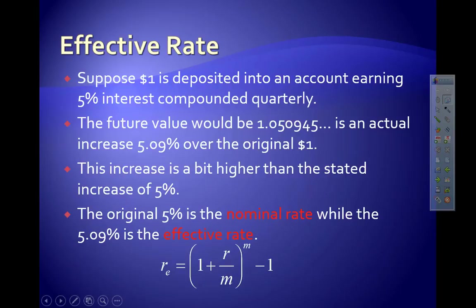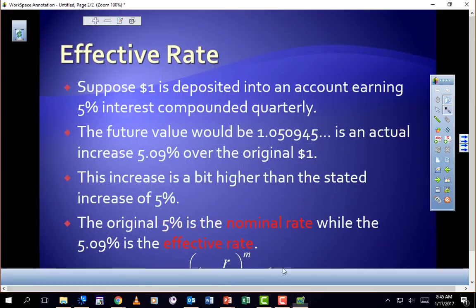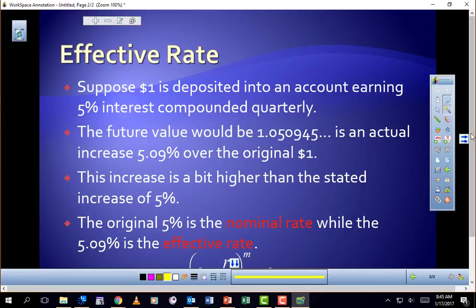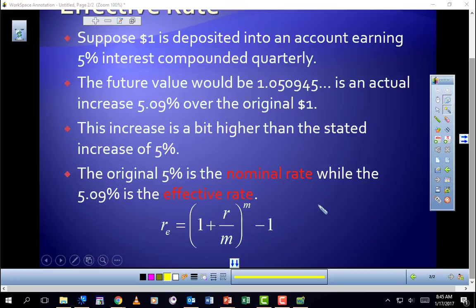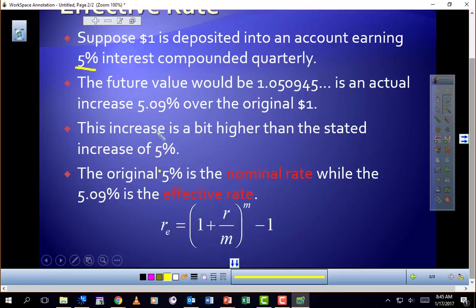You might be asked on a couple problems to do an effective rate problem. I think the formula is up on the board, so it shouldn't present you any problems. All you do is plug in some numbers. For this problem right here, if you were doing 5% and you're compounding quarterly, you would put a 4 right here, you put a 4 right here, you put 0.05 right here.